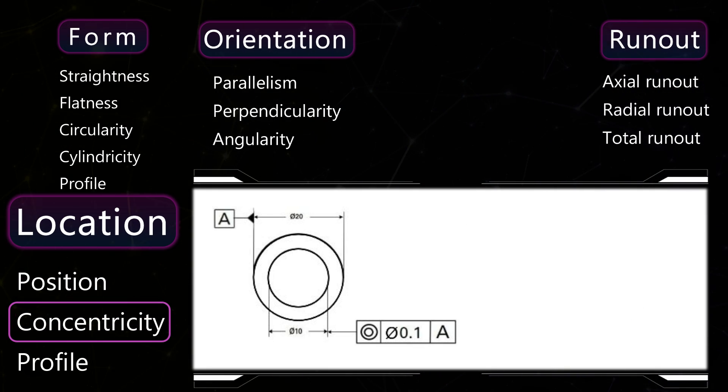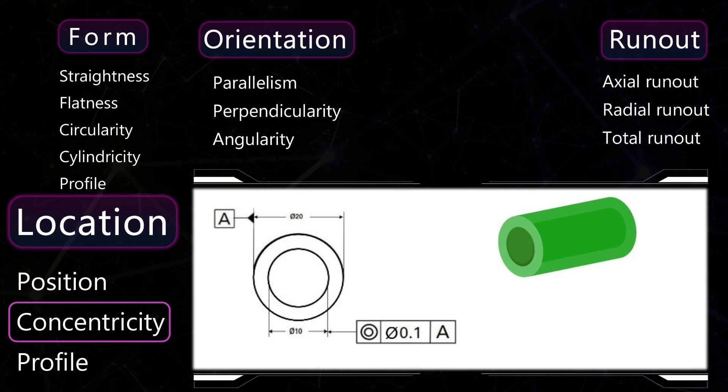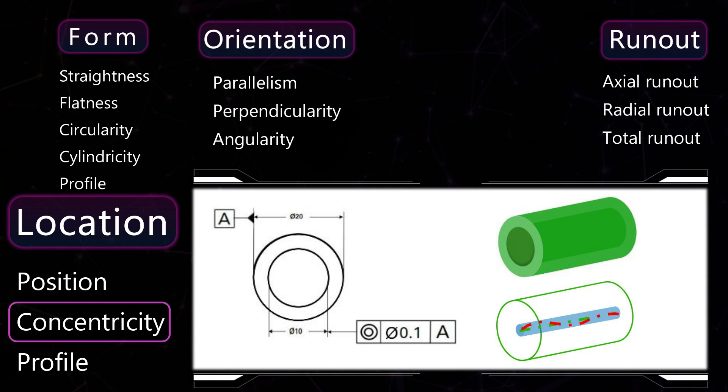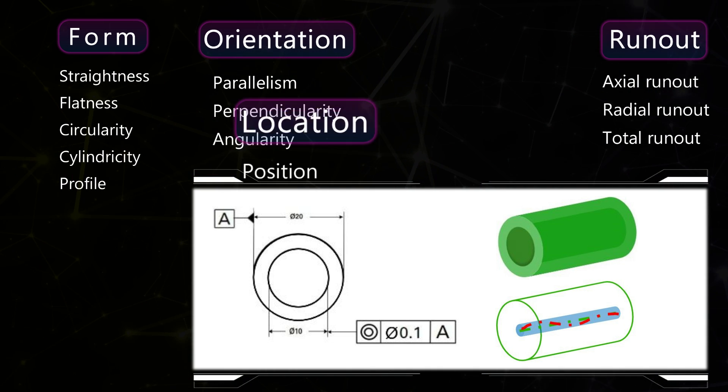Concentricity, or coaxiality, indicates that the centerline of the tolerated circle lies in a tolerance zone which is a circle with a diameter of the tolerance value. This circle has the same centerline as the datum.